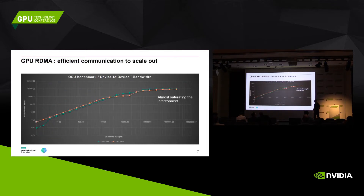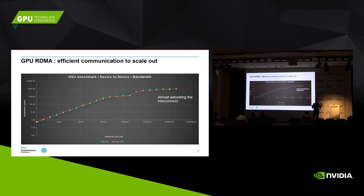This is what we tested here. We tested both Intel OPA and Mellanox EDR — that's the current generation at 100 Gb/s — and as you can see we are almost saturating the interconnect with both technologies. The important point on this slide is that this is between two GPUs in two different nodes, with the test running from one GPU memory to another GPU memory, getting 10 GB/s between the two GPU memories on two different hosts. That's how we scale out our system.